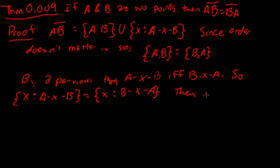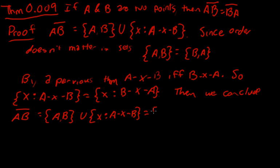Then we conclude the segment AB is equal to AB union the set x such that x is between A and B, which is the same as everything backwards because the order in sets does not matter. So BA union x such that x is between B and A equals BA. So we have now proven that the segments AB and BA are the same segment, just they're written a little bit differently, but it's the same exact set of points, so they are interchangeable.